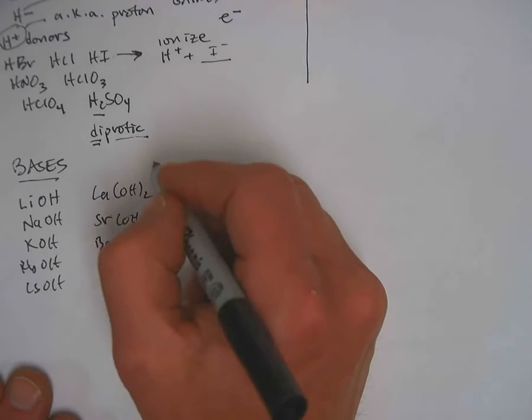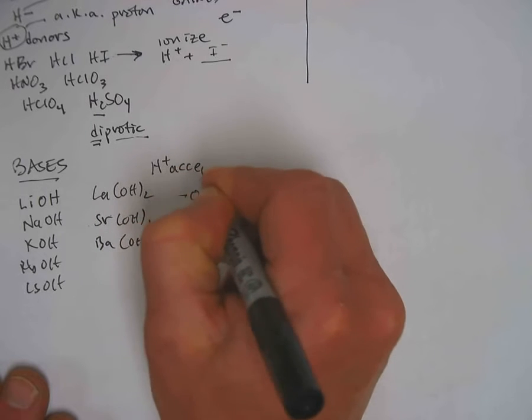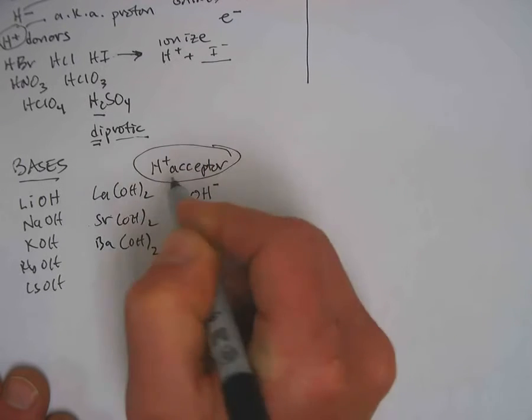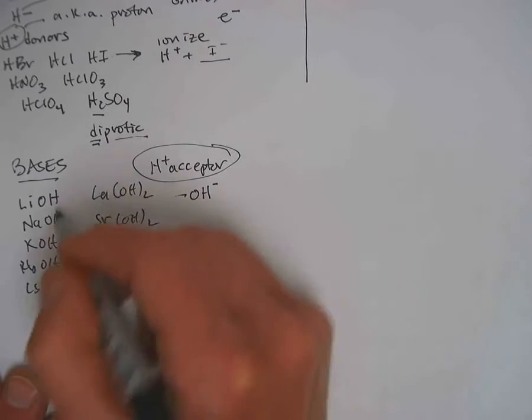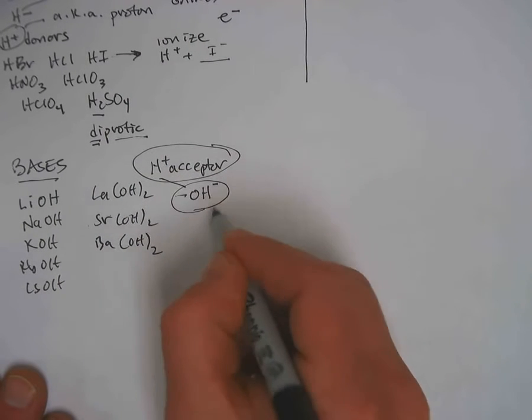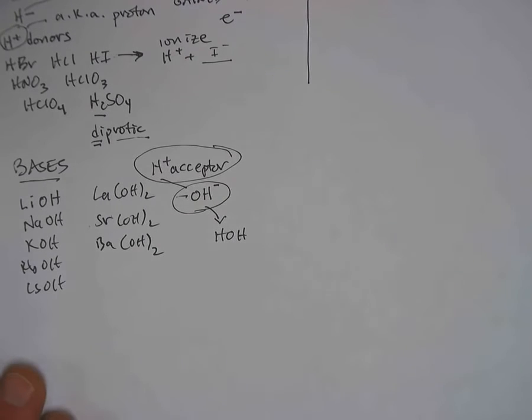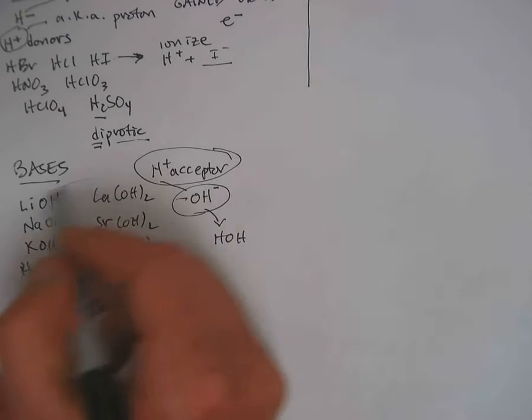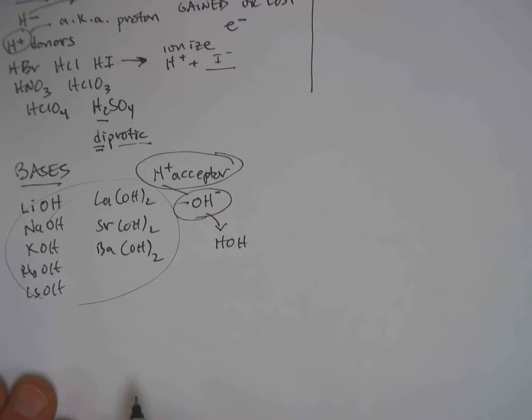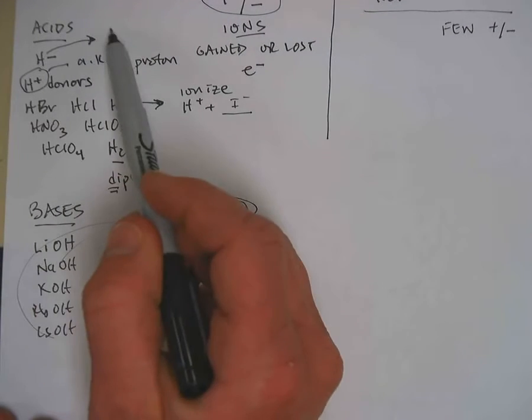The definition of a Bronsted-Lowry base is a good H plus acceptor, and you'll see in all of these bases, when they ionize, they just need one H to form water. And so OH minus is a really good strong base, and these are good sources of that OH minus. Acids are proton H plus donors. Bases are proton or H plus acceptors.